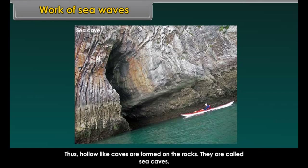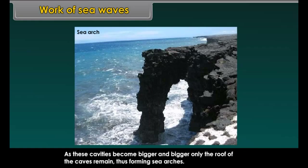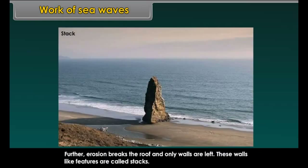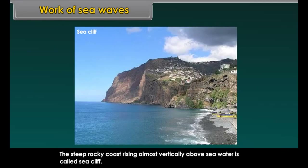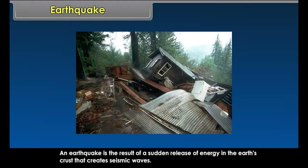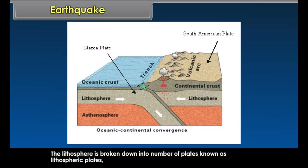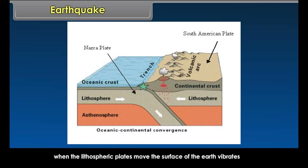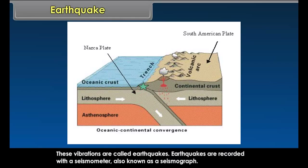The erosion and deposition of sea waves give rise to coastal landforms. Sea waves continuously strike at the rocks, cracks develop, and over time they become larger and wider. Thus hollow-like caves are formed on the rocks, called sea caves. As these cavities become bigger and bigger, only the roofs of the caves remain, forming sea arches. Further erosion breaks the roof, and only walls are left — these wall-like features are called stacks. The steep rocky coast rising almost vertically above sea water is called a sea cliff. The sea waves also deposit sediments along the shores, forming beaches.